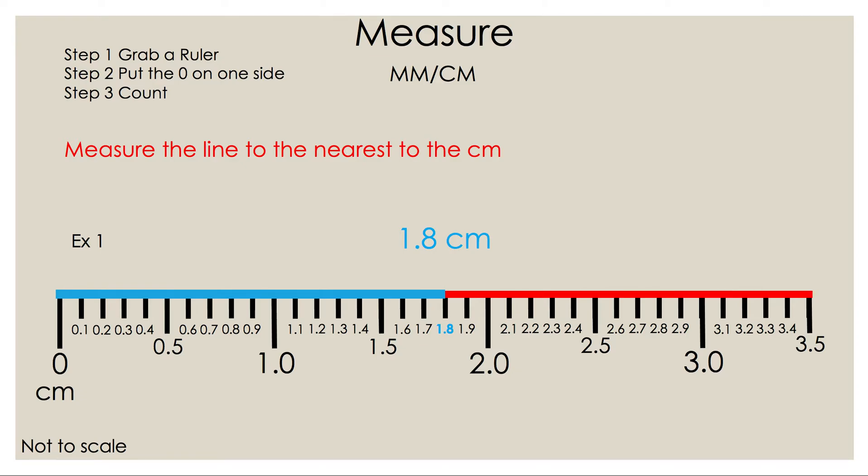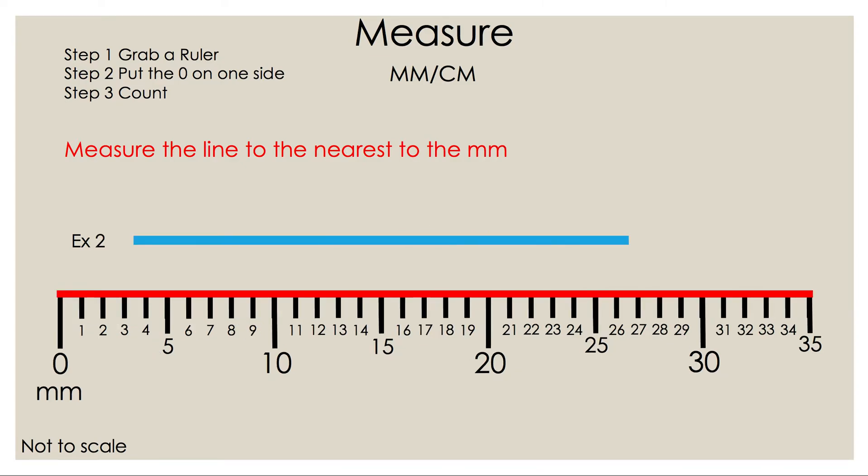Let's take a look at example two. Measure the line to the nearest millimeter. This time we're doing the same thing but with millimeters and when we count with millimeters we're counting by 1. Let's move the line to the ruler. Let's pick a tick mark that has a number on it. In this case 20.